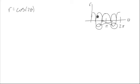And so this is what it looks like. Now notice that one hump goes between negative pi fourths and pi fourths.